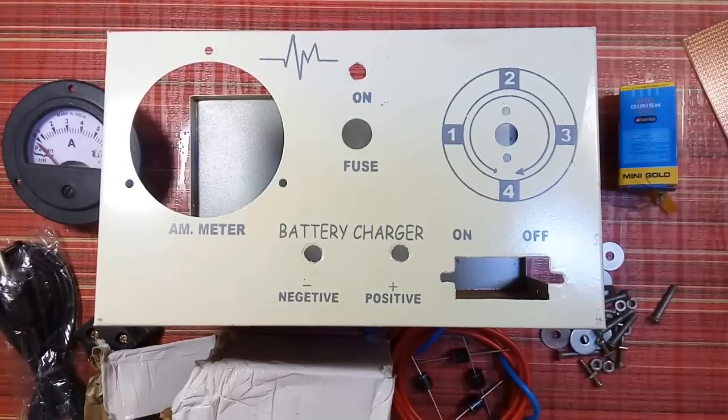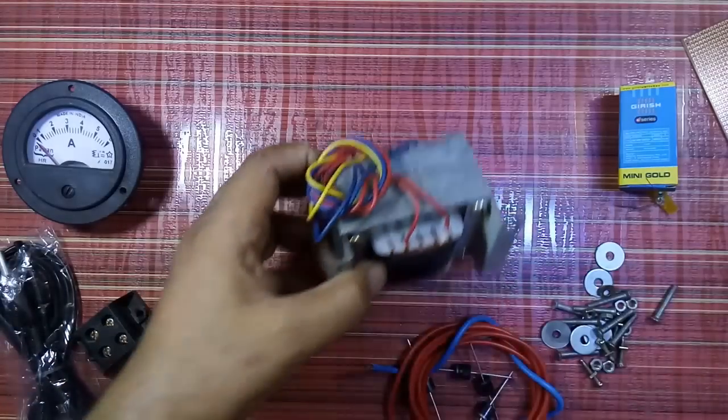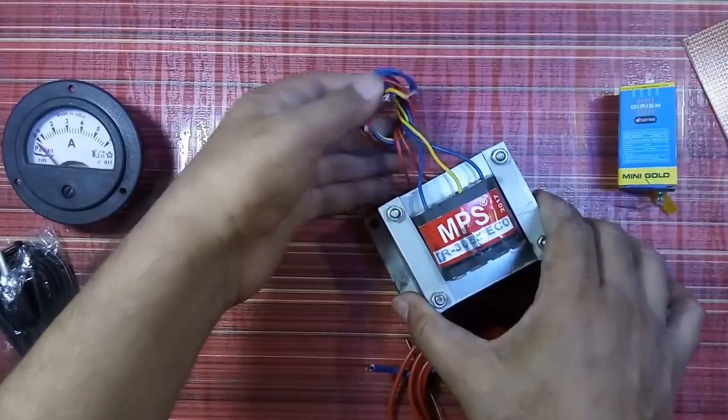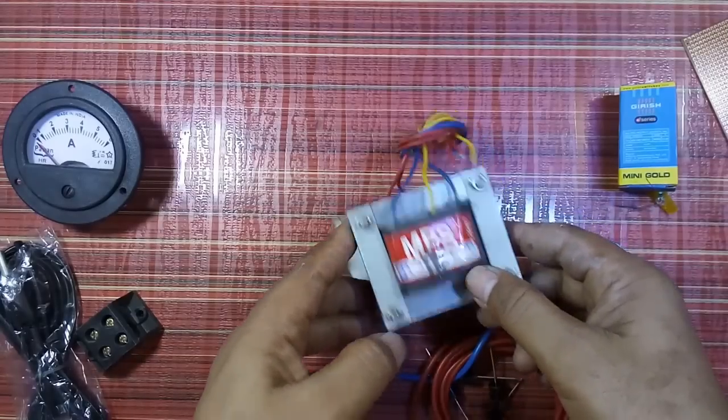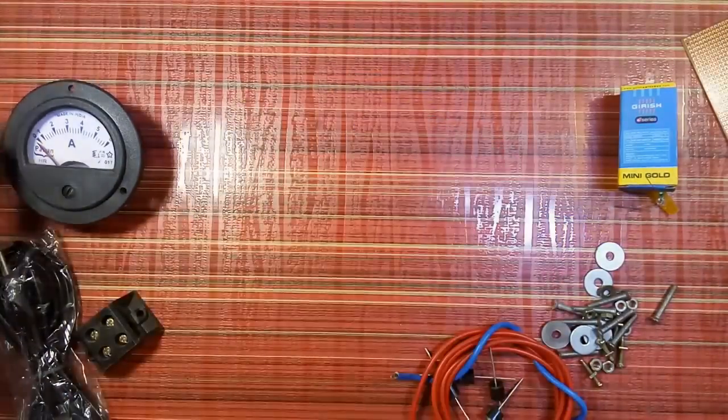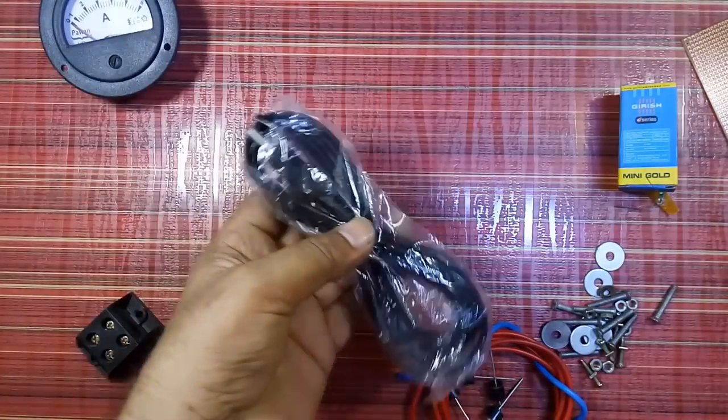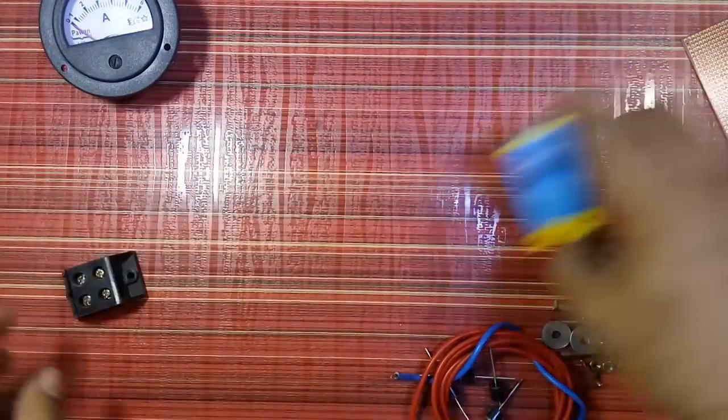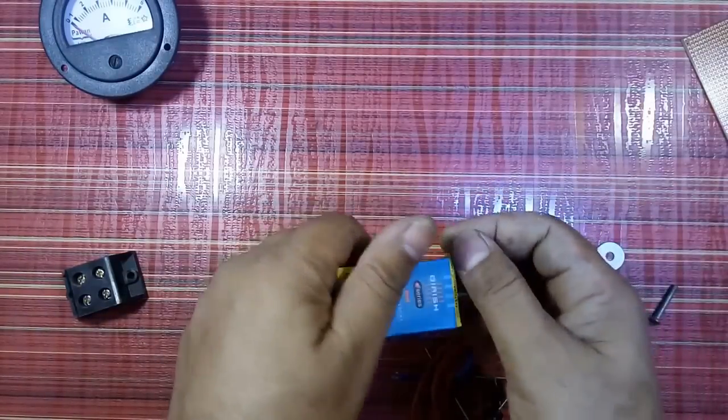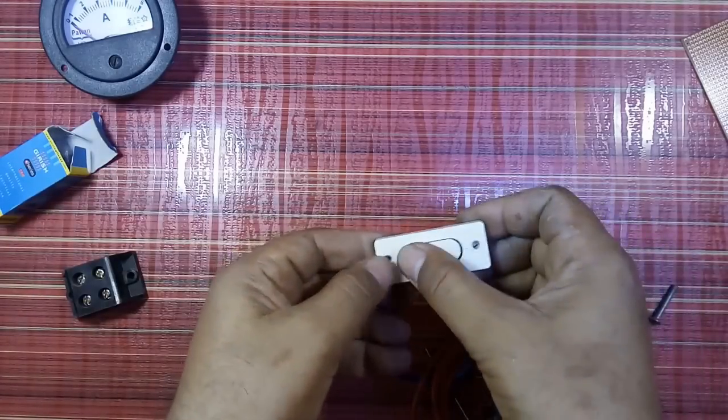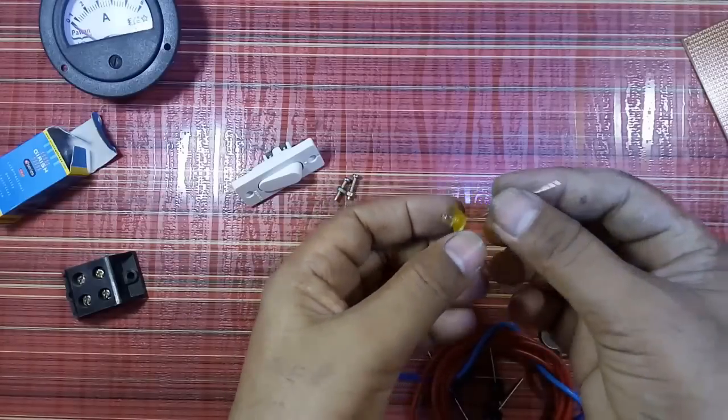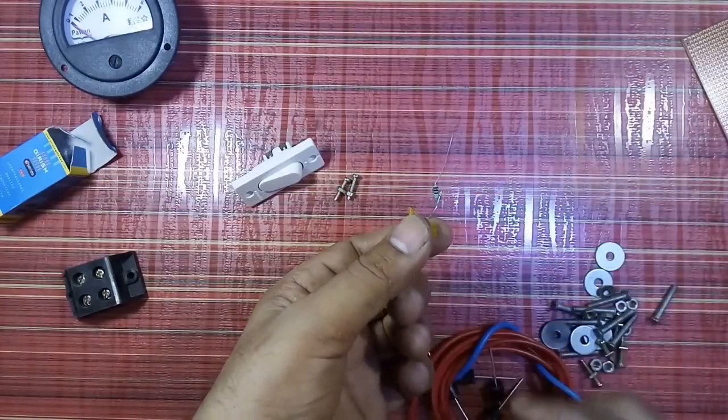Welcome friends, in today's video of 12-volt battery charger with 5 amperes transformer. So the parts needed are: one cabinet, this is the 5 ampere transformer 12-0-12, 5 ampere, 1 ampere meter or ammeter, one power cable connection socket, on-off switch, LED with 1 kilo-ohm resistance to connect with 12 volt.